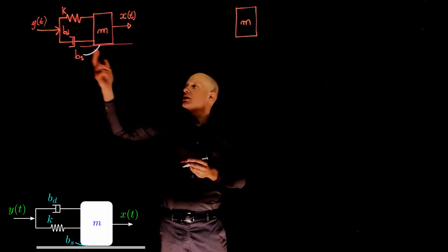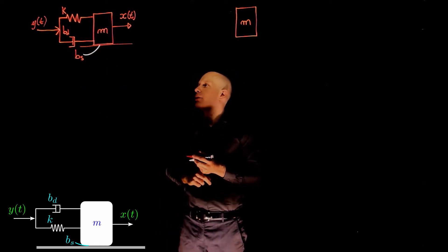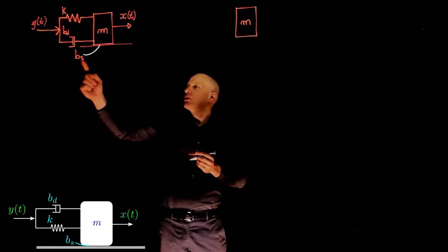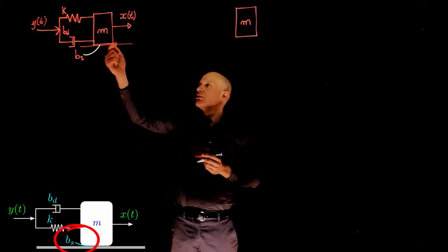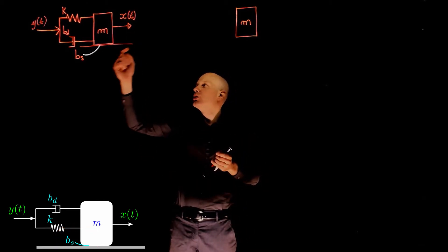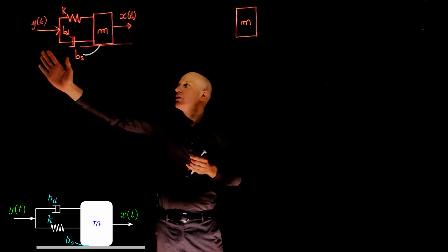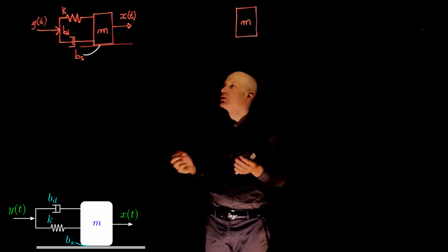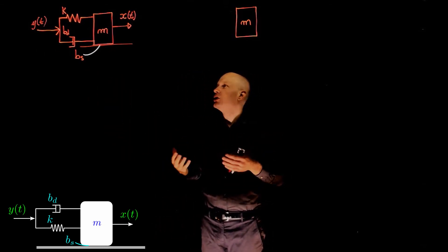Note that y(t) is applied to the mass through the spring and the damper, and there is also a coefficient of viscous friction between the mass and the sliding plane. We are interested in the transfer function between x and y, output divided by input. To do that, we first need to find the equation of motion.